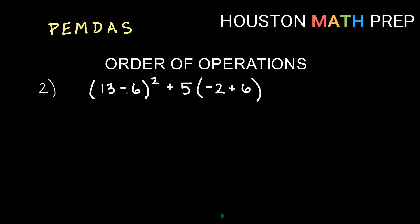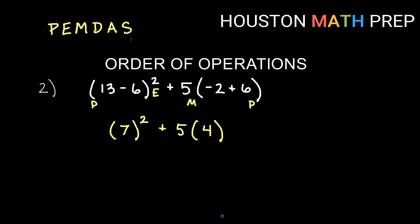Moving on to the next example. We have 13 minus six, all in parentheses, squared. Then we have five outside of parentheses — which is a multiply — and inside those parentheses we have negative two plus six. There are two sets of parentheses to deal with. Doing the first set: 13 minus six gives us seven. And negative two plus six gives us four.